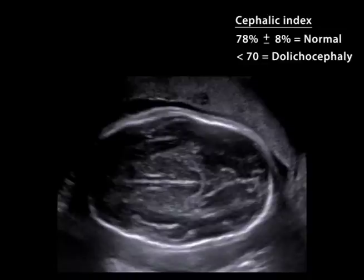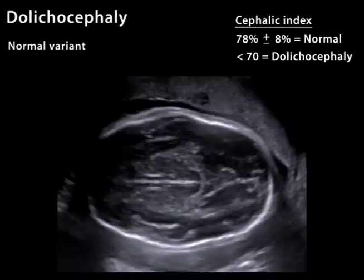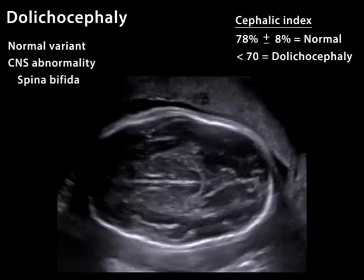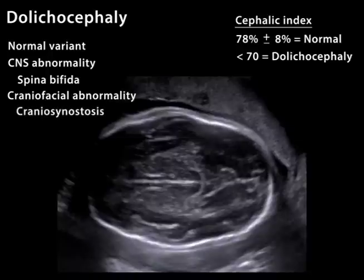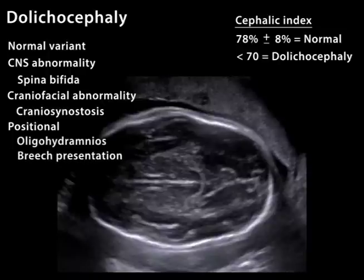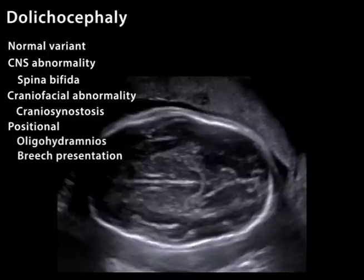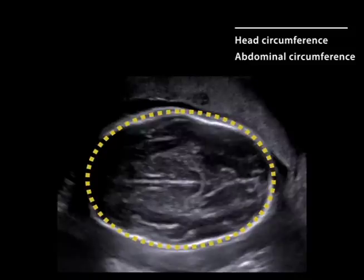A cephalic index below the normal range indicates dolicocephaly. Dolicocephaly may be a normal variant or may be observed in the setting of a central nervous system abnormality such as spina bifida, a craniofacial abnormality such as craniosynostosis, or may be positional due to oligohydramnios or breech presentation. With dolicocephaly, only the head circumference, abdominal circumference, and femur length should be used to calculate gestational age.